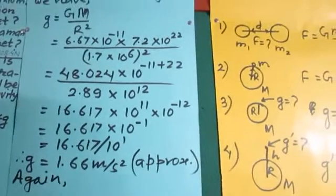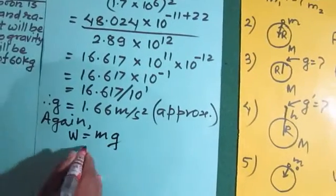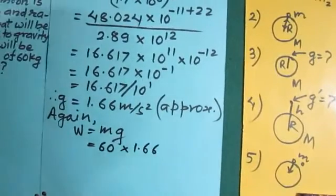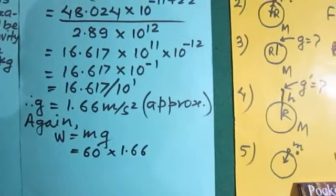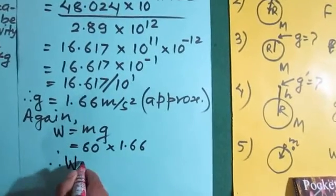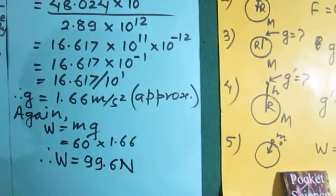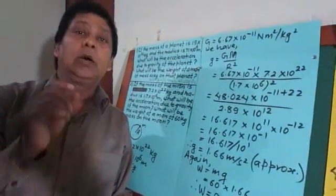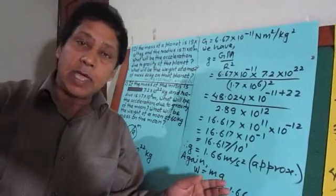For the second part, the weight of the man is asked. Using W = m × g: mass of the man is 60 kg and acceleration due to gravity we calculated is 1.66 m/s². Multiplying: 1.66 × 60 = 99.6. Therefore the weight of that man on the moon will be 99.6 Newtons. This way we can calculate the acceleration due to gravity of a heavenly body and the weight of a body on its surface using g = G·M/R² and W = m·g.